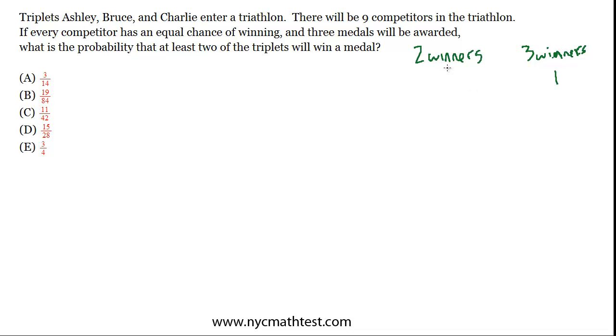And then, how many ways are there to have two winners? Well, there are three possible candidates for our two winners. It could be Ashley and Bruce, it could be Bruce and Charlie, or it could be Ashley and Charlie. So hold on to that thought for a minute, and we'll come back to it.